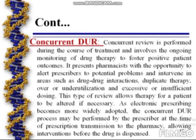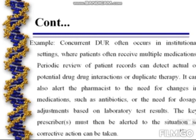As electronic prescribing becomes more widely adopted, the concurrent DUR process may be performed by the prescriber at the time of prescription transmission to the pharmacy, allowing interventions before the drug is dispensed. For example, concurrent DUR often occurs in institutional settings where patients often receive multiple medications. Periodic review of patient records can detect actual or potential drug interactions or duplicate therapy, and can alert the pharmacist to the need for changes in medications such as antibiotics or dosage adjustment based on laboratory test results. The key prescriber must then be alerted so corrective action can be taken.